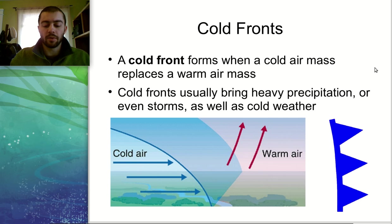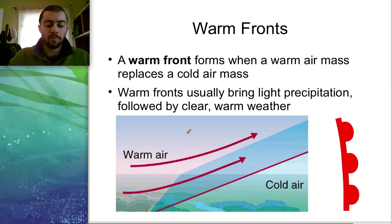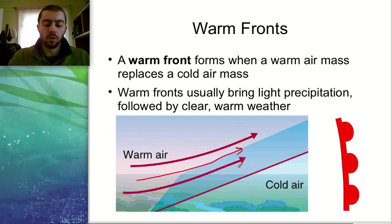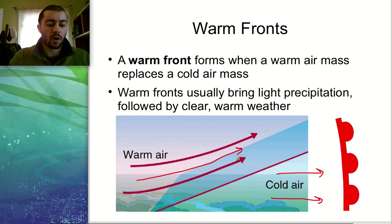The next type is a warm front. A warm front forms when a warm air mass replaces a cold air mass — kind of the opposite of the cold front. This time the warm air mass, because warm air is less dense, is going to rise and push its way on top of the cold air mass, sliding over top of it, as opposed to the cold front which pushes underneath a warm air mass.